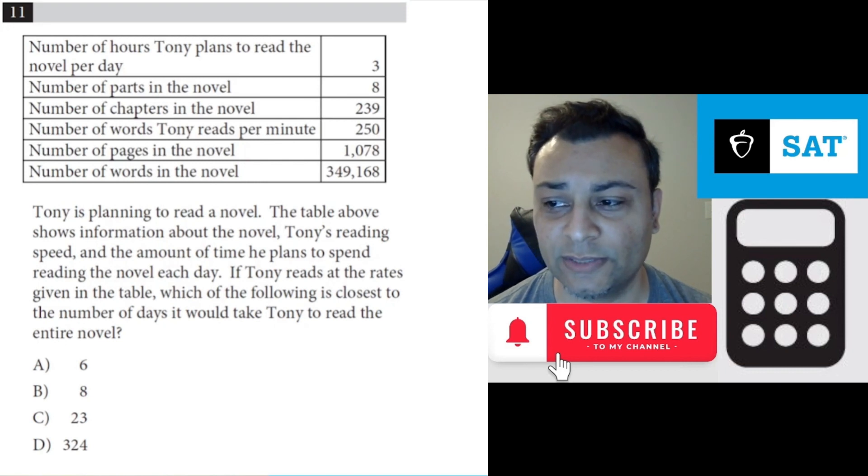If Tony reads at the rates given in the table, which of the following is closest to the number of days it would take Tony to read the entire novel?